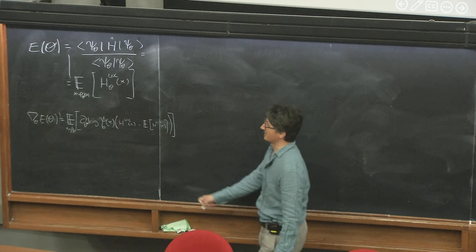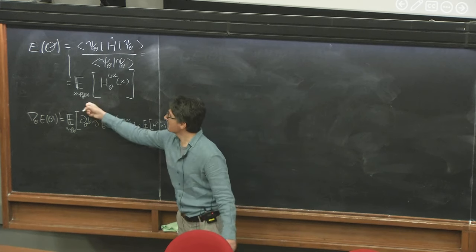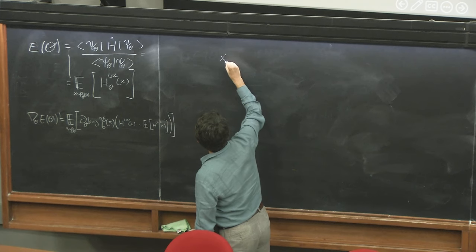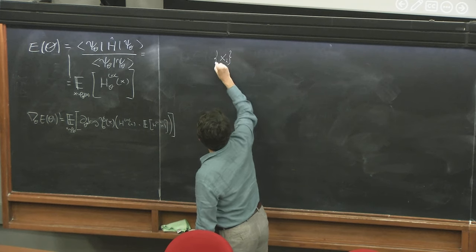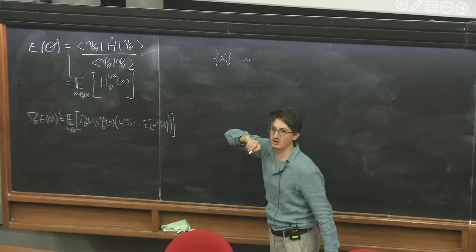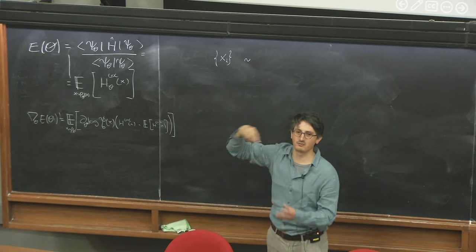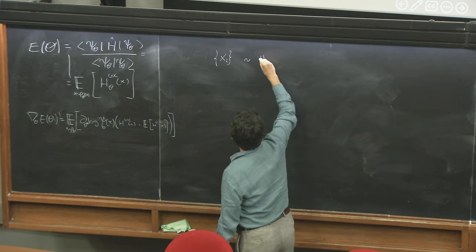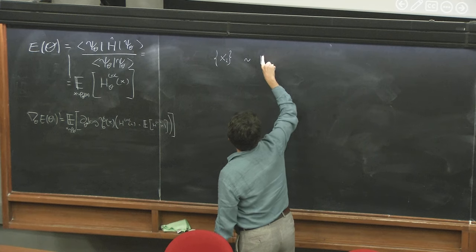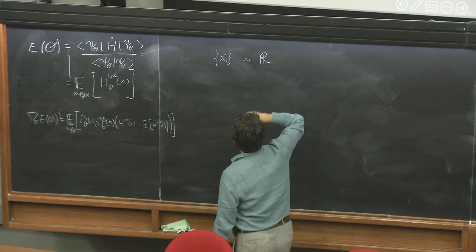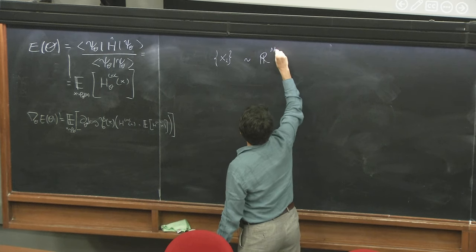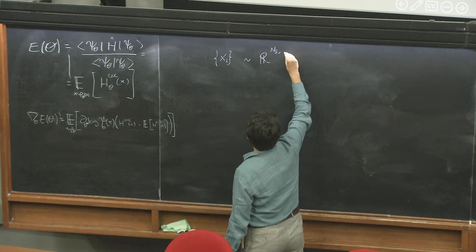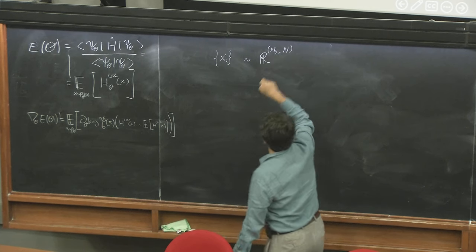So what happens? I do Markov chain Monte Carlo sampling and I get a bunch of configurations X_i. If I had to do it on a computer, this is some sort of array of dimensions — some R — and this would have dimension: number of samples times number of spins.